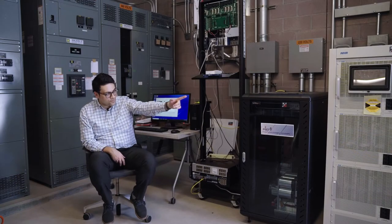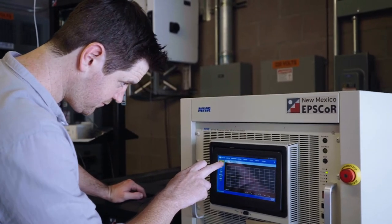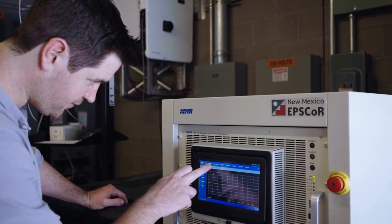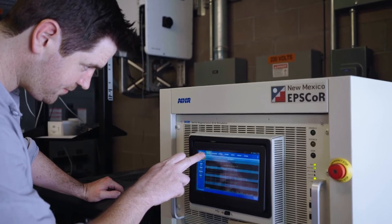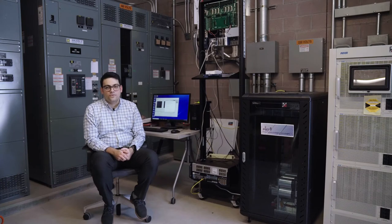On the right hand side, you can see our grid simulator. It's a four-quadrant 24-kilowatt grid simulator that enables us to technically emulate a power grid. So it gives us full flexibility for our hardware in the loop testing platform.